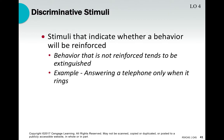Discrimination and discriminative stimuli appear again from classical conditioning — we should be able to tell the difference between behaviors that are reinforced and behaviors that are not. The textbook's example: you answer the phone when it rings, not when it doesn't. At your job or school you know which behaviors earn praise from your boss or teacher, and which behaviors will get you in trouble. You can tell what works and what doesn't.